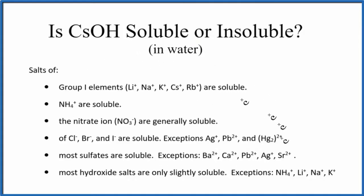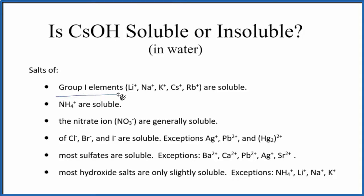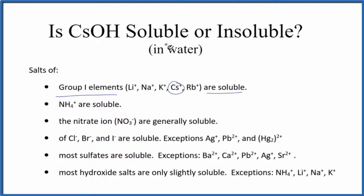We could look at these rules here. This is a brief set of the solubility rules. As we go down the rules, one of the first rules is Group 1 elements — those are elements in Group 1 on the periodic table. They're soluble. So we have cesium bonded to the hydroxide group. Here's our cesium ion. This is going to be soluble in water.